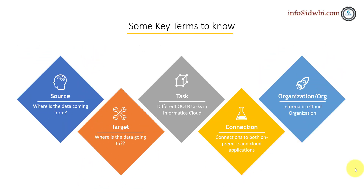Let's understand some of the key terms of Informatica Cloud. If you're new to the Informatica tool these would be new to you, but if you're already a Power Center developer these might not be. These are pretty basic terms. First: source — the source is where the data is coming from, which means from which object, whether it's a flat file, table, or cloud application that you want to pull the data from.